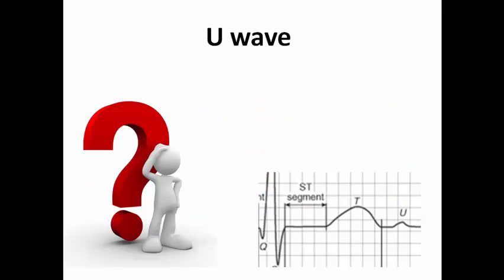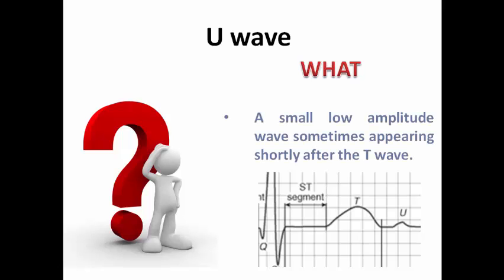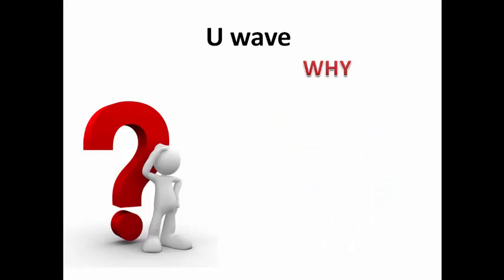First of all, let's remind ourselves with the lectures of ECG interpretation. What is meant by U wave? The U wave is a wave following the T wave, which is a small low amplitude wave. Sometimes it appears and sometimes it doesn't appear in the ECG, that's why it is not very famous, but all of us need to know that there is something called the U wave after the T wave that sometimes appears in the ECG.